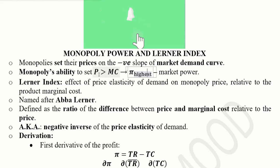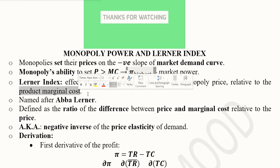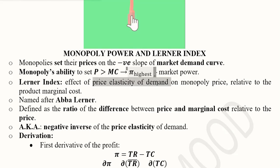The Lerner Index is the effect of price elasticity of demand on monopoly price relative to the product's marginal cost. This is the definition which guides us about the formula. In the formula, the price elasticity of demand will have a role to play and the effect of the difference of marginal cost and the price will also be observed.